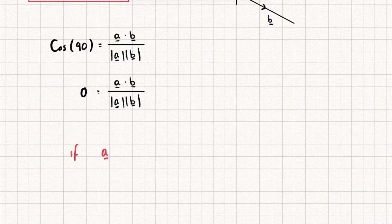So what we can say is, if a dot b is equal to zero, then this means that our two vectors are perpendicular.